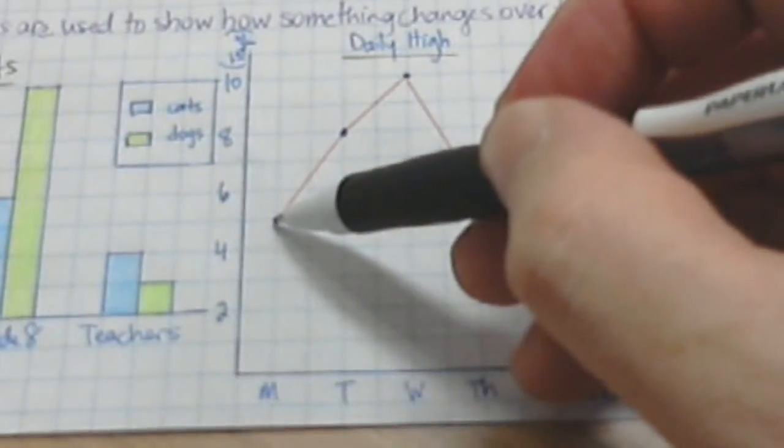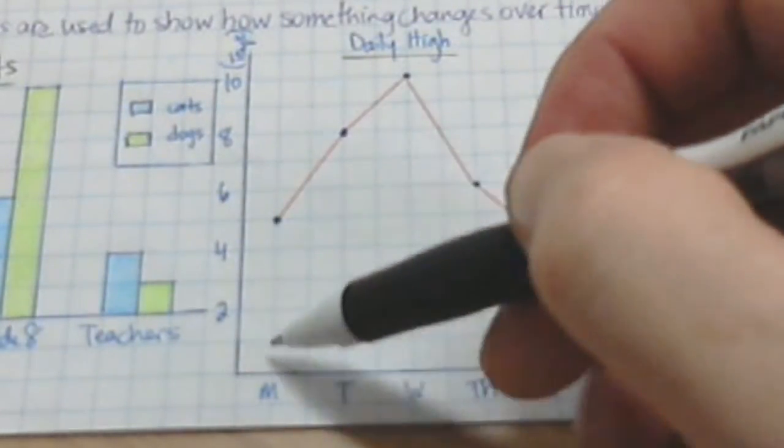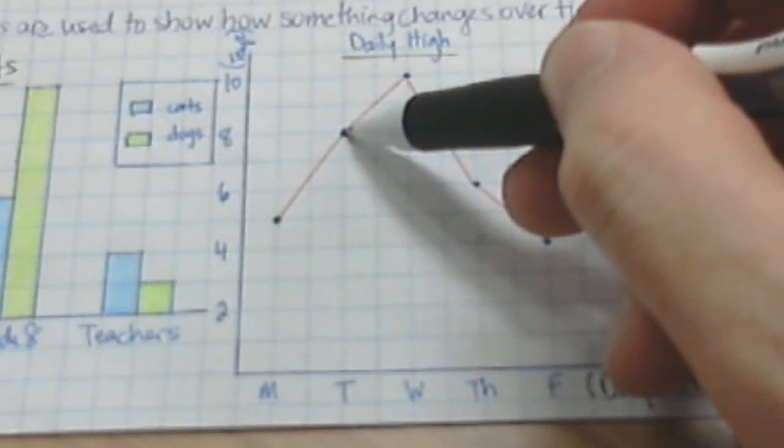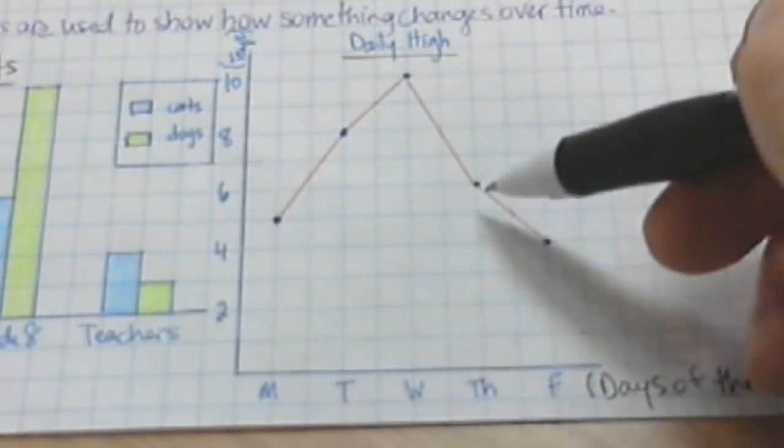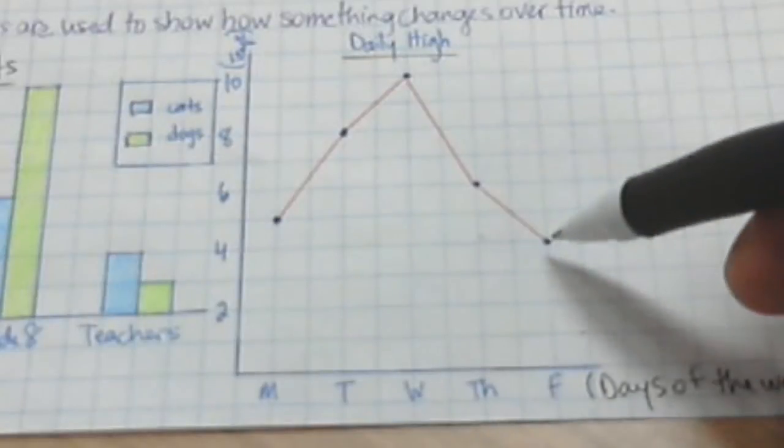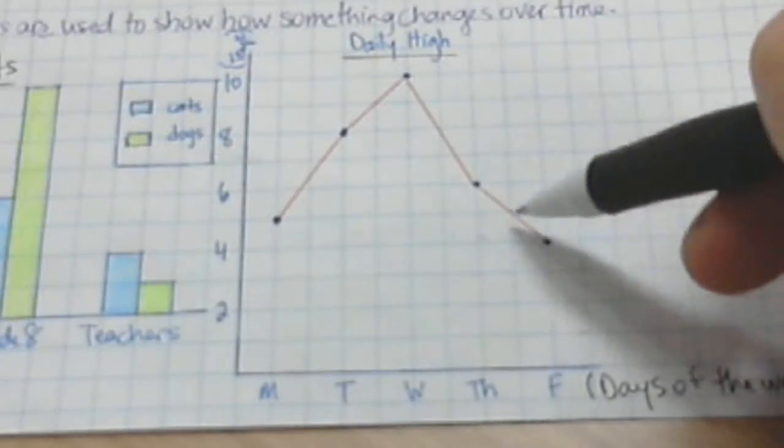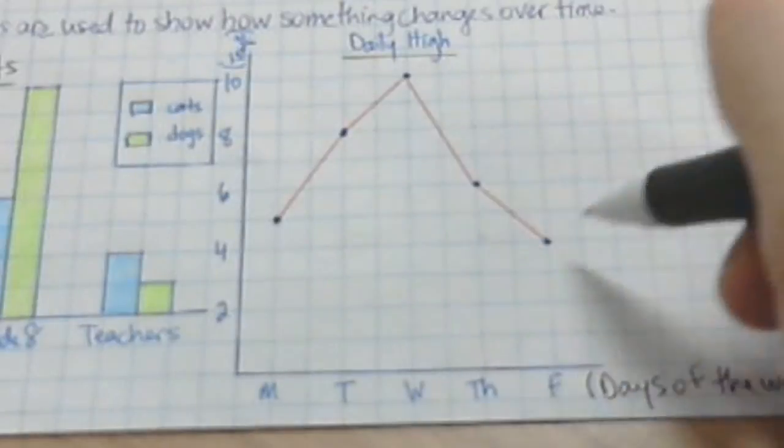And what happens is it's a couple-step process where you first see where the data intersects. So on Monday, the daily high is 5. On Tuesday, the daily high is 8. Wednesday, the daily high is 10. Thursday, the daily high is 6. And Friday, the daily high is 4. So you draw those dots in, and then what happens is you connect the dots.